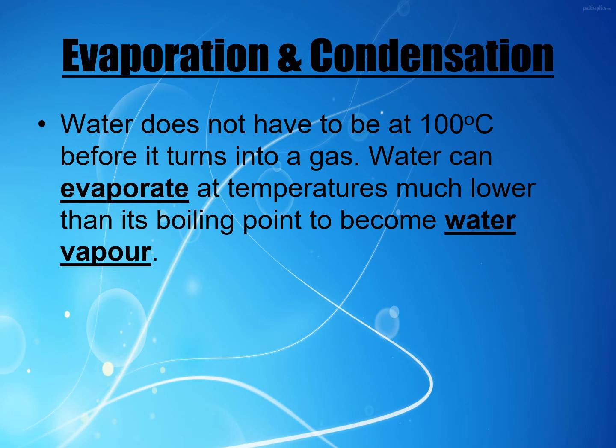We know that boiling only occurs at 100 degrees Celsius at sea level, but evaporation occurs at much, much lower temperatures. We know this because puddles formed when it rains evaporate and form water vapor even on very cold days. So water does not need to be anywhere near its boiling point for evaporation to take place. We need to explain why this is the case — what is happening in terms of the particles within the fluid to cause that evaporation to occur.